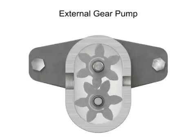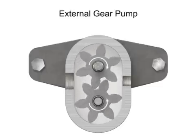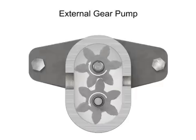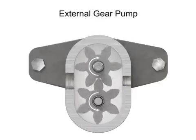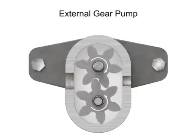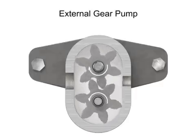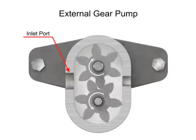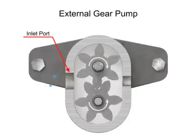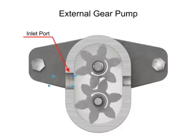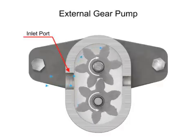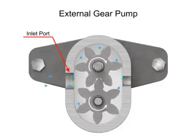As the gears rotate away from each other and come out of mesh, they create an expanding volume on the inlet side of the pump. This creates a vacuum at the inlet port, allowing fluid to flow into the pump. Then fluid flows into the cavities and is trapped by the gear teeth.